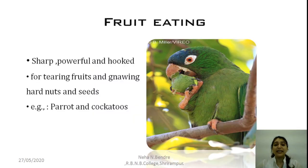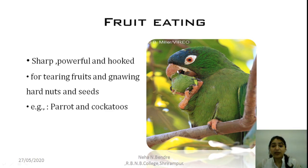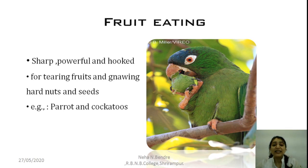The next is the fruit eating type of beak, which belongs to frugivorous birds — birds which eat fruits. This kind of beak is sharp, powerful, and hook-shaped. The upper part of the beak has a hook shape, and the lower jaw is very sharp for cutting fruit shells, tearing fruits, gnawing, and extracting the edible material. This type of beak is present in parrots and cockatoos.